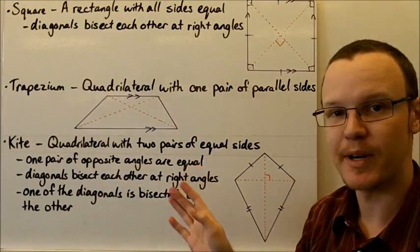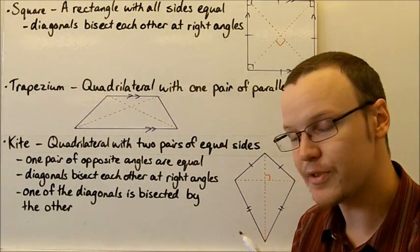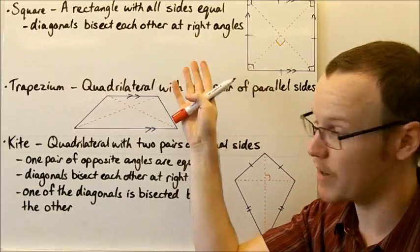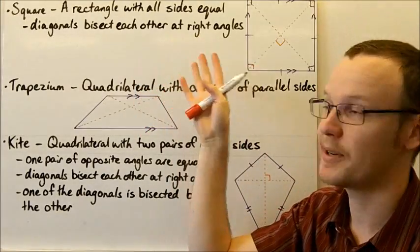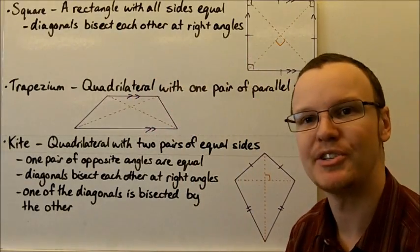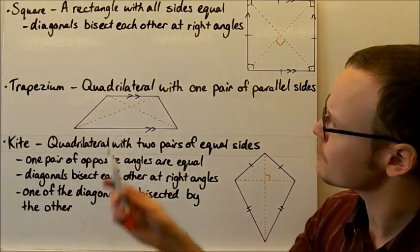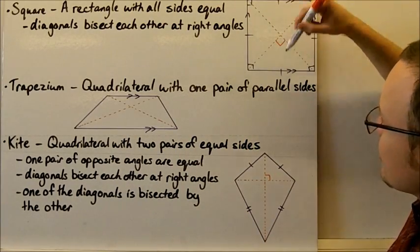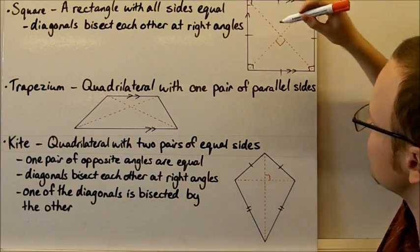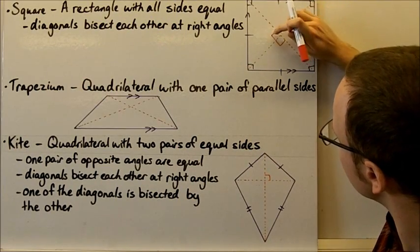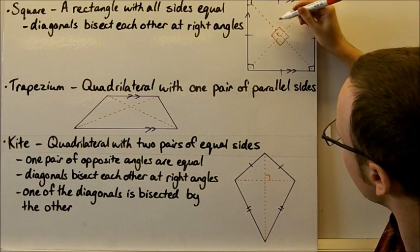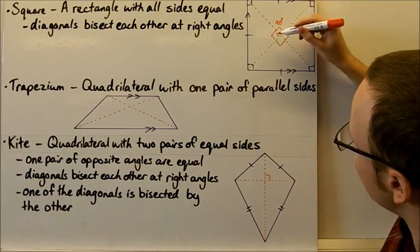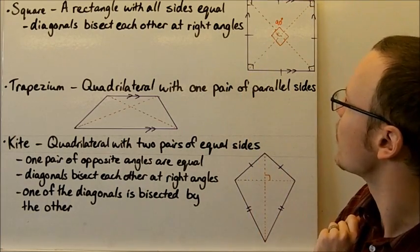The properties of a square: a square is a rectangle, so all of the properties that apply to a rectangle apply to a square as well. And because a rectangle is a parallelogram, all the properties of a parallelogram apply to a square too. A square is a special rectangle that has all sides the same length. The diagonals bisect each other at right angles, so the angles at the centre where the diagonals cross are all 90 degrees.